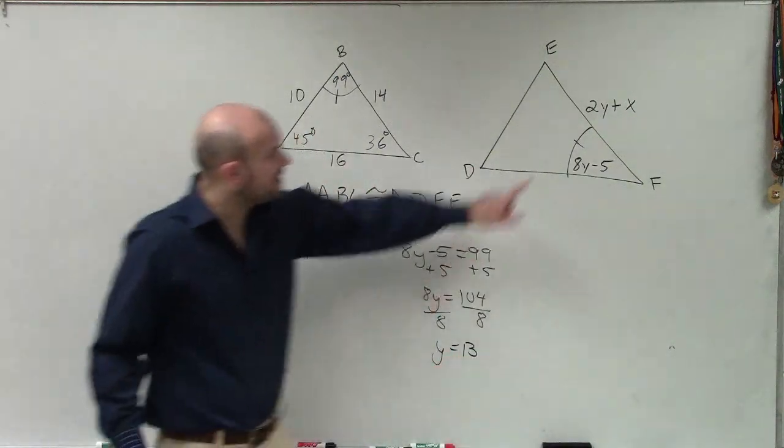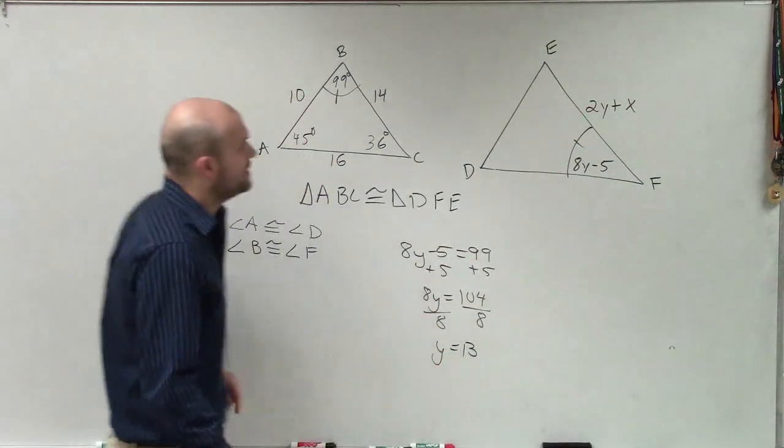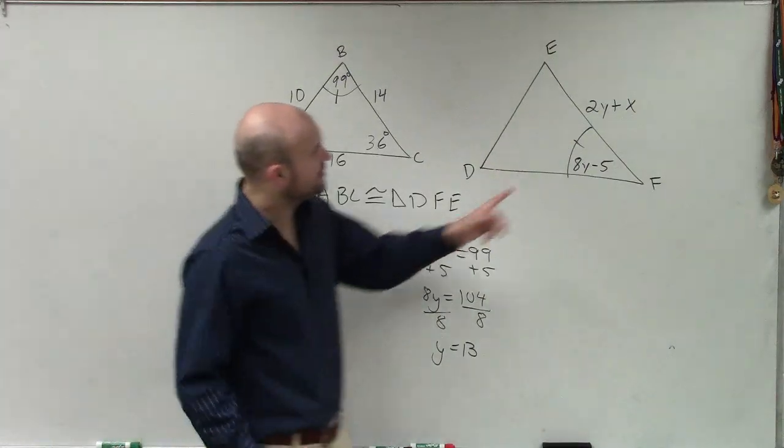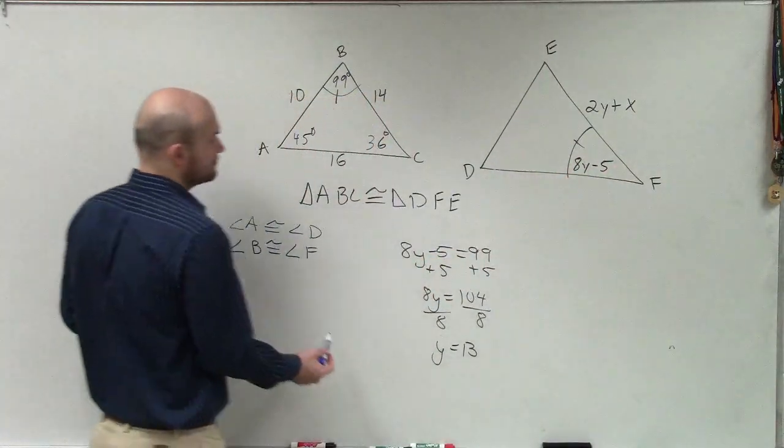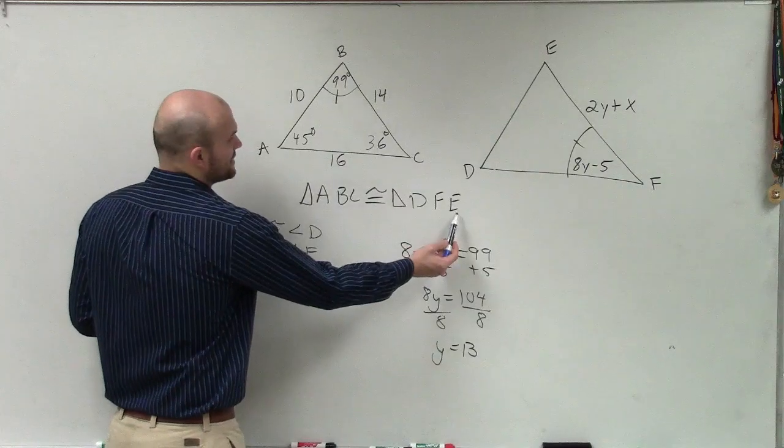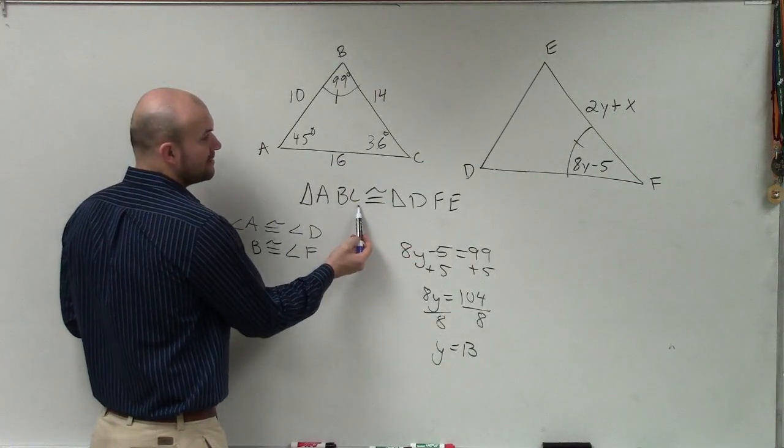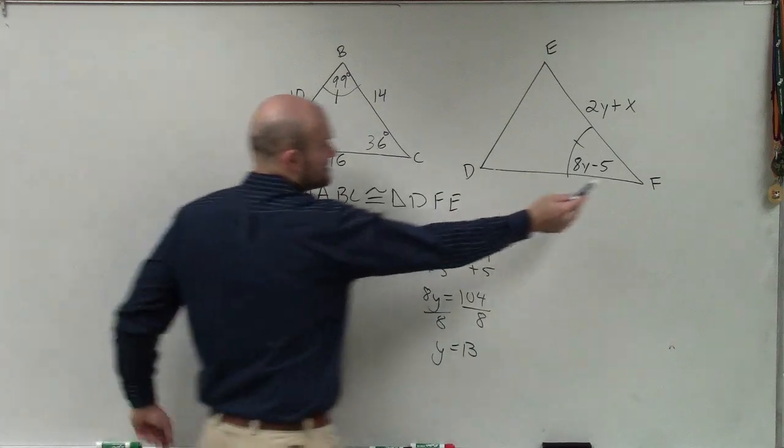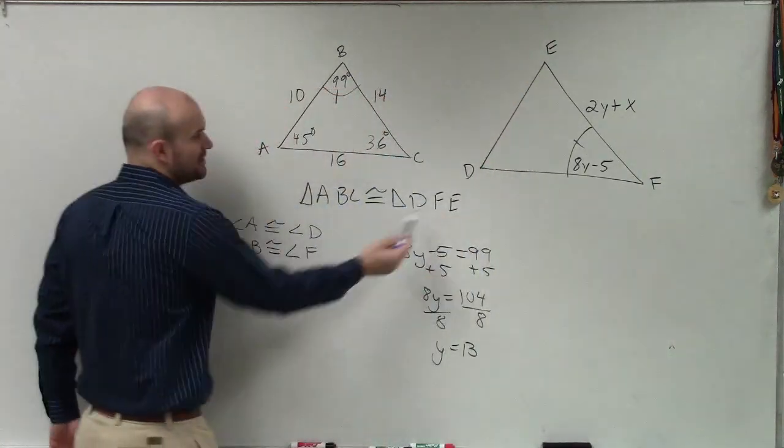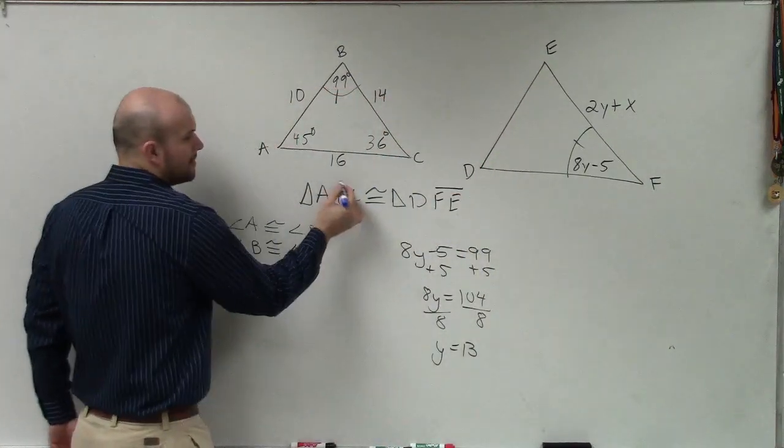All right, now to find the value of X, we know that. Now let's go and look at this. So FE is congruent to BC. FE, this line, FE is congruent to BC.